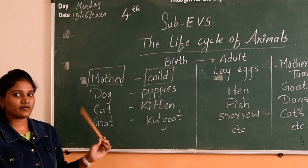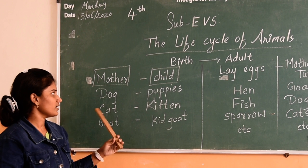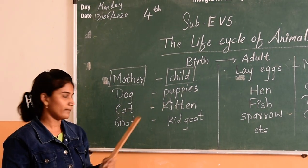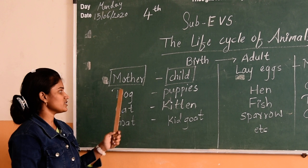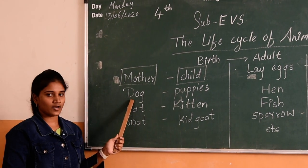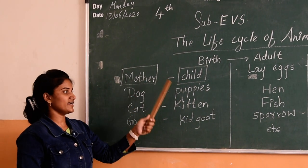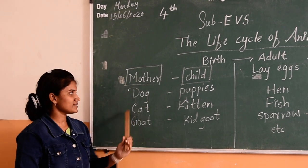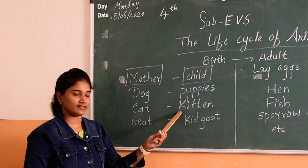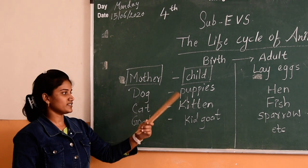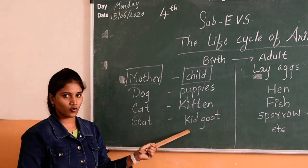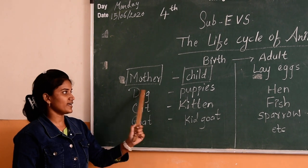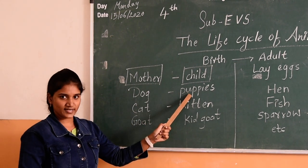Today we will see some animals and their young, and what we call them. First, the mother dog — a dog's child is called a puppy. A cat's child is called a kitten. A goat's child is called a kid. So these are the mothers and their young.